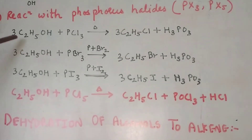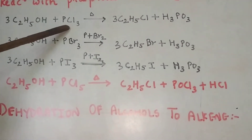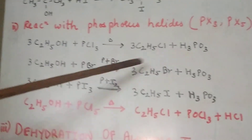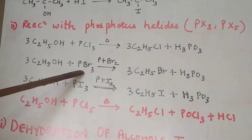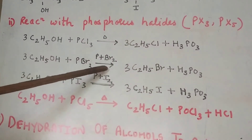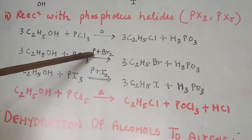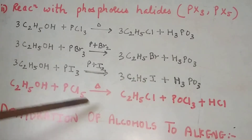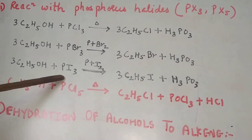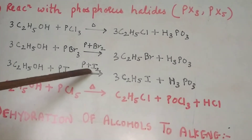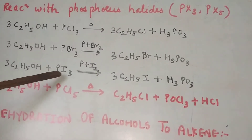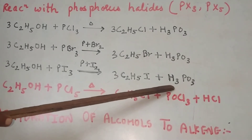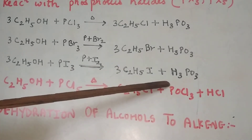These reactions are given for primary alcohol only. Ethyl alcohol when treated with PCl3 gives chloroethane (ethyl chloride) with H3PO3. Ethyl alcohol when treated with PBr3 — which requires phosphorus plus bromine on the arrow — gives ethyl bromide with H3PO3. In case of PI3, ethyl alcohol treated with PI3 — requiring phosphorus and iodine — produces phosphorus triiodide in situ, and you get three moles of ethyl iodide with H3PO3.